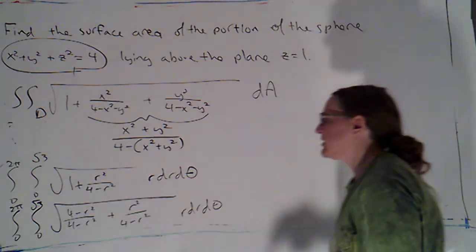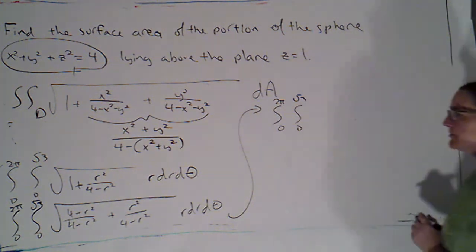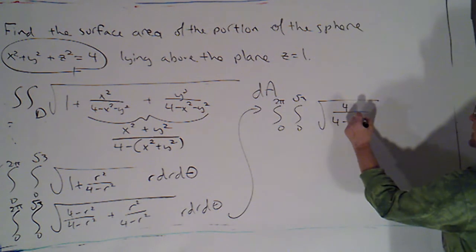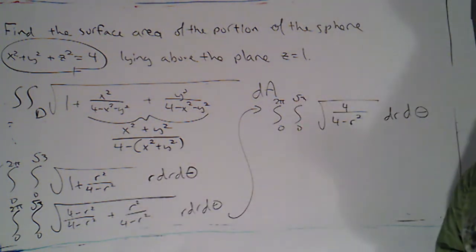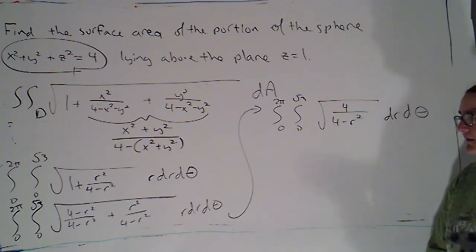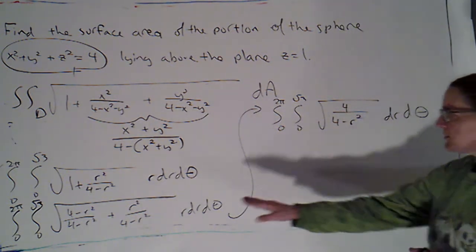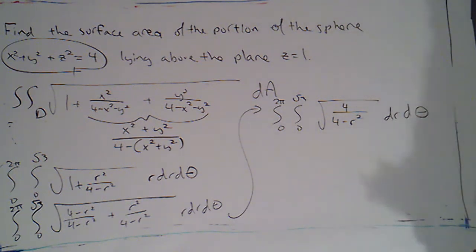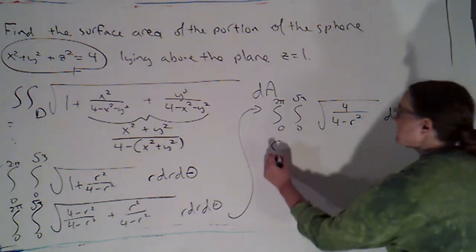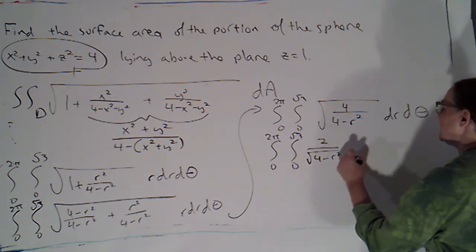The 4 minus r squared plus r squared is just 4, so the integrand becomes the square root of 4 over 4 minus r squared. Since square roots distribute over division, that's 2 over root 4 minus r squared — the square root of 4 is just 2. This is a useful trick: when you have messy stuff under a radical and part of it is a fraction, combine everything into one fraction first. So the integral is from 0 to 2π, 0 to root 3, of 2 over root 4 minus r squared, times r dr dθ.